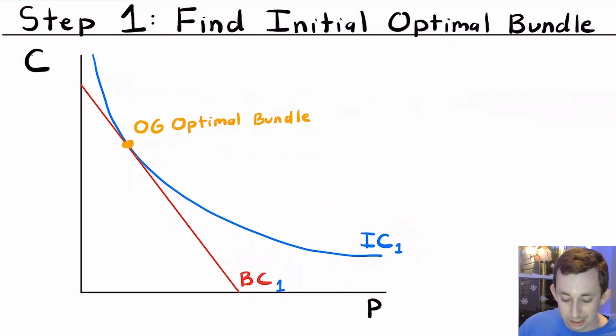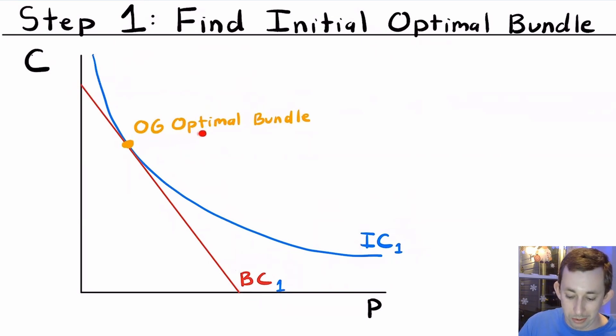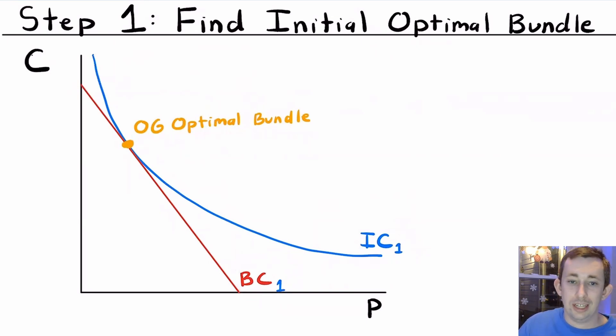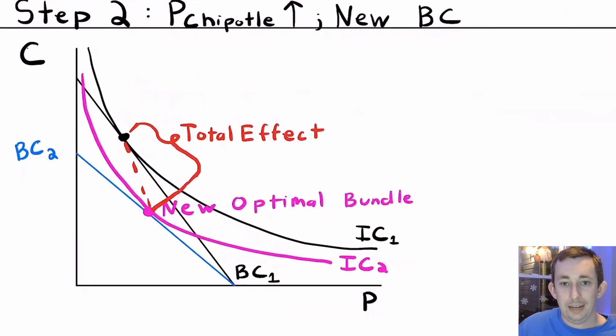All we're going to do first is: we know what's happening — we have our indifference curve, we have our budget constraint, we find where they're tangent, and we get this point in orange. We're going to call that the OG, or the original optimal bundle.